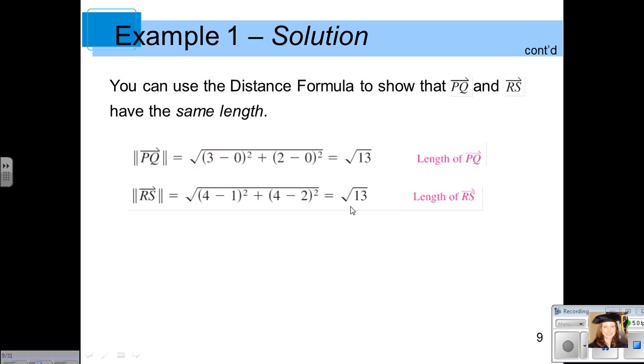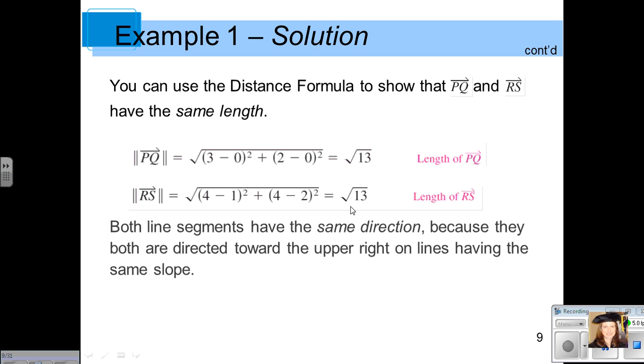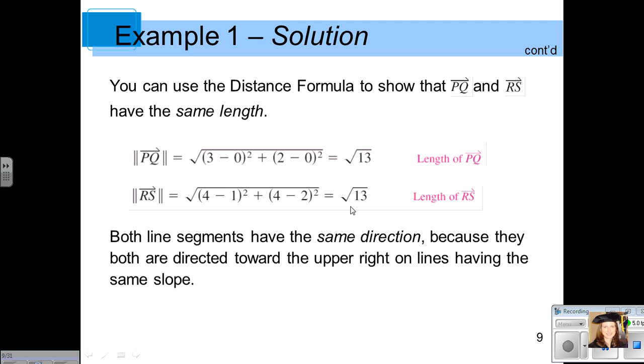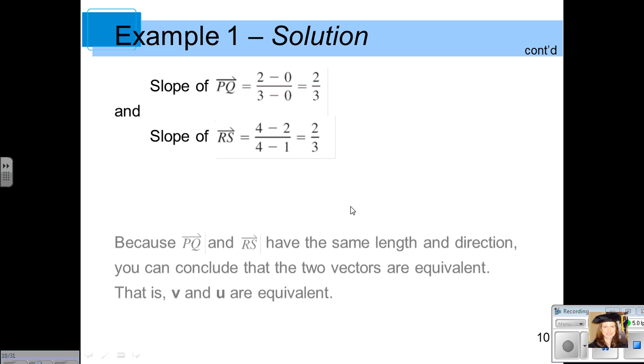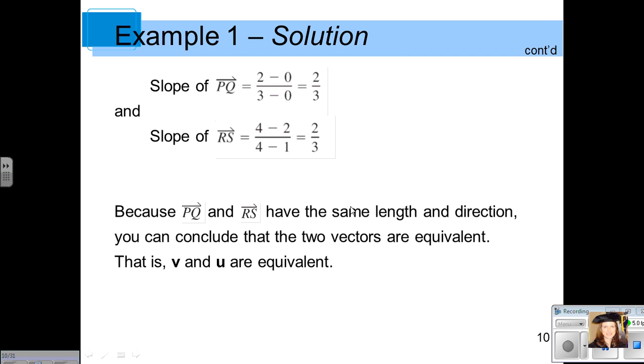Now we want to show that they're going in the same direction. It did appear from the graph that they are going in the same direction, but you can verify that by finding their slopes. Again, that's another formula that we learned in our algebra classes. You can find the slope from P to Q and the slope from R to S. Using those formulas, we find the slope of the vector PQ is 2 over 3, and the slope of the vector RS is also 2 over 3. So those vectors have the same magnitude and they're going in the same direction. Therefore, U and V are equivalent vectors.